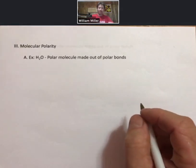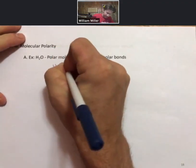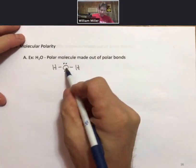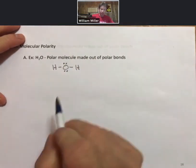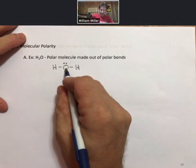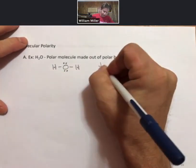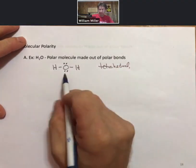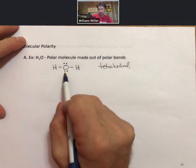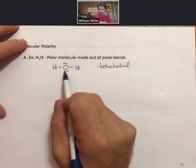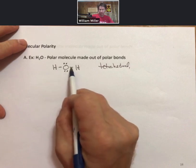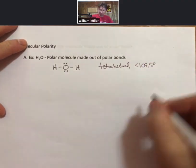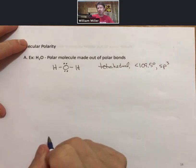Our process is going to be to draw the Lewis structure, then look at the central oxygen. Note that it has one, two, three, four electron groups around it. That means that the electron geometry around the central atom is going to be tetrahedral. Bond angles are going to be — the basis bond angle for tetrahedral is going to be 109.5 degrees. We can see we have two electron pairs here. Electron pairs push the atoms to less than the ideal bond angle, so it's going to be less than 109.5 degrees, and that oxygen has an sp3 hybridization.